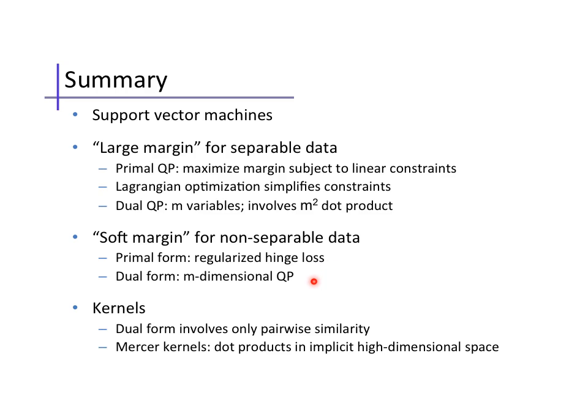We saw that this is equivalent to using a simple surrogate loss called the hinge loss, and applying a form of L2 regularization. Again, the optimization has a dual form that involves only pairwise similarity between the data.